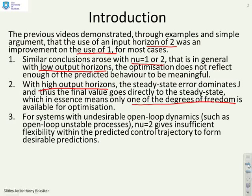If you've got systems with undesirable open-loop dynamics, and that could be an unstable process or oscillation or something like that, then nu equals 2 is often insufficient in terms of the flexibility it gives you to shape the trajectories to give you the predictions that you want.